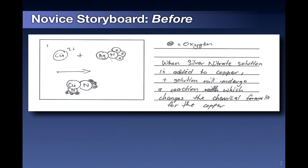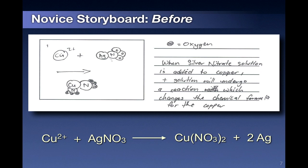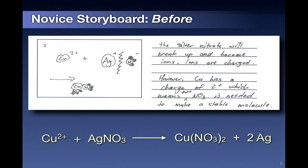For example, you can see here that the student has drawn a copper ion and a silver nitrate molecule just like the equation appears to be showing. You can see that the student really doesn't have much of an idea of what's going on and is trying to imagine what's happening simply on the basis of the chemical formulas and equation.